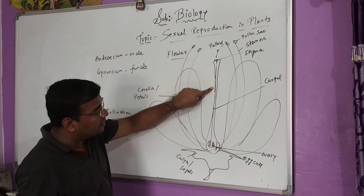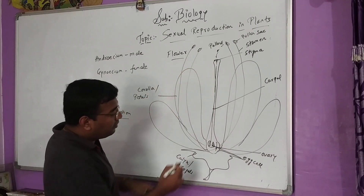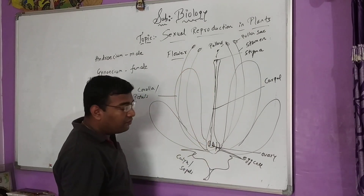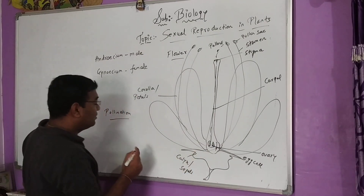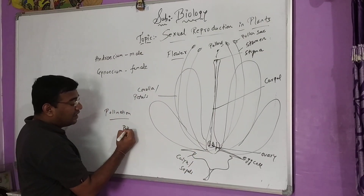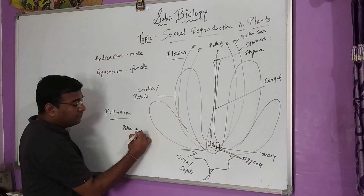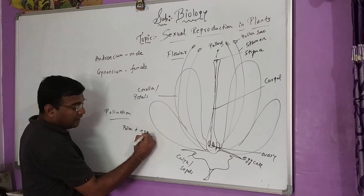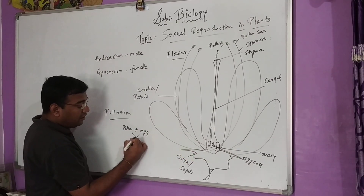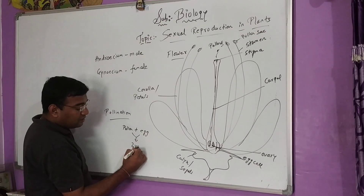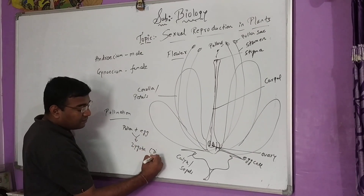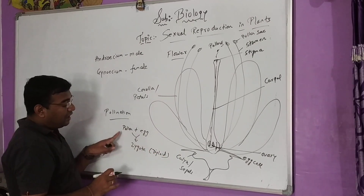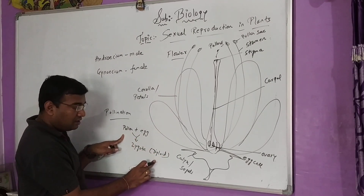From there, the pollen tube transfers the pollen to the ovary, and here fertilization takes place. The pollen fuses with the egg cell in the ovary and forms a zygote. The zygote is a diploid cell — the two gametes are each haploid, so haploid plus haploid becomes diploid, that is N plus N equals 2N.